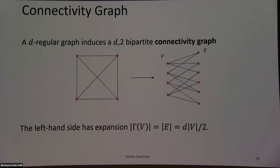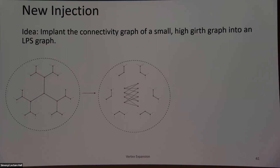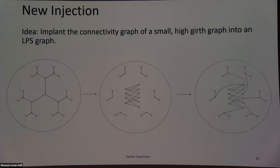The left-hand side of this connectivity graph has expansion D/2. What we're going to do is implant the connectivity graph of a small high-girth graph into our LPS graph. Specifically, I start with the neighborhood of some vertex, delete that neighborhood, replace it with this connectivity graph, and reattach it into my graph. Simple as that.